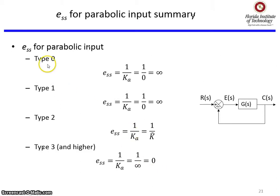So here's our summary. Type 0 system, the steady-state error is infinity. Type 1 system, the steady-state error is infinity, and by the way, the infinite steady-state error is bad. Type 2 system, the steady-state error is finite, and it's a function of K hat. And type 3 systems and higher, the steady-state error is zero.